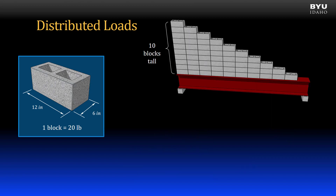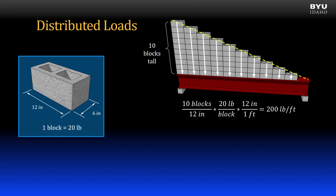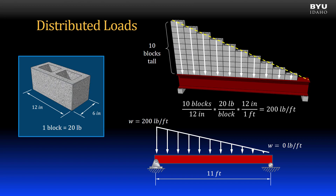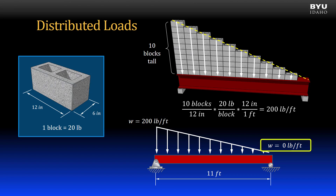Now suppose we stack the blocks with a 10-block stack on the left end decreasing to zero blocks on the right end. The magnitude of the distributed load at the left end is 200 pounds per foot. However, the distributed load changes as we move from left to right. We could simplify this as a triangular distributed load, going from a maximum of 200 pounds per foot oriented downward on the left to zero pounds per foot on the right.